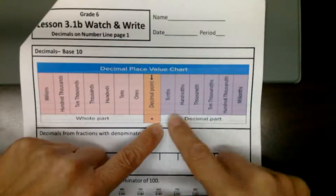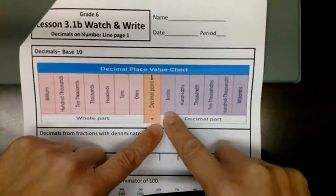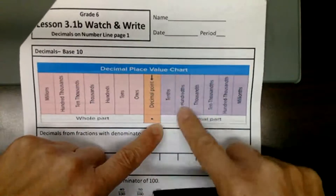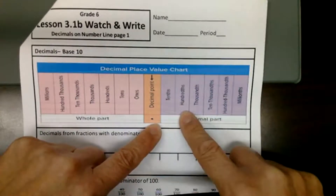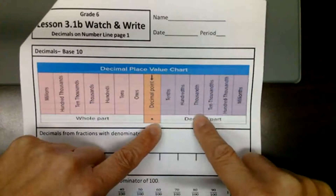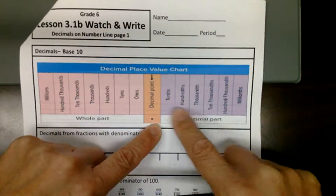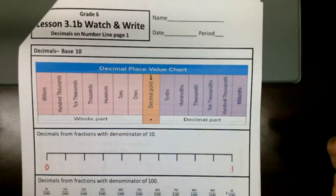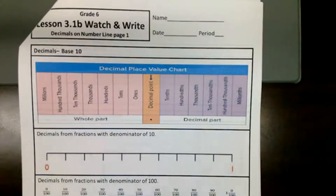Just like fractions, the decimal places to the right of the decimal are not whole numbers — they're part of a number. The first place is the tenths place. The next place after the decimal is the hundredths. The next place after the decimal is the thousandths. We're going to talk about what that means, especially as it relates to fractions and number lines.